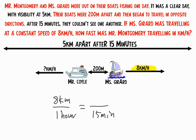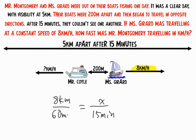I'm going to use proportional reasoning to figure out how far she went in 15 minutes. Because if she went 8 kilometers in one hour — or 8 kilometers per hour — then since one hour is really 60 minutes, I can divide by 4 to get 15 minutes, and divide 8 by 4 to realize that Ms. Girard would have traveled 2 kilometers in 15 minutes.